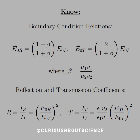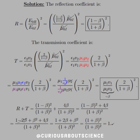For transmission, we have ε₂v₂ over ε₁v₁, multiplied by (E₀ₜ over E₀ᵢ) squared — because reflection stays in the same medium while transmission involves two different mediums, hence two different dielectric constants. Plugging in the reflection coefficient: it's (1 minus β) over (1 plus β), and since we're squaring it, the complex parts go away. So R equals ((1 minus β) over (1 plus β)) squared.